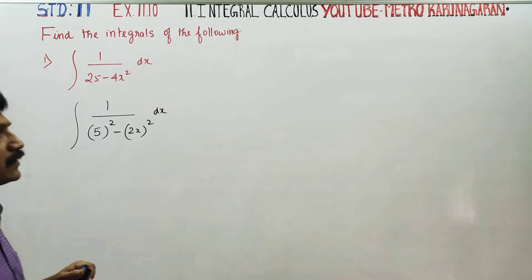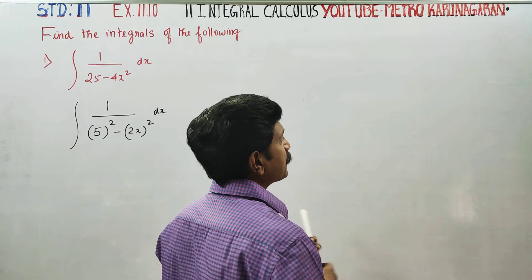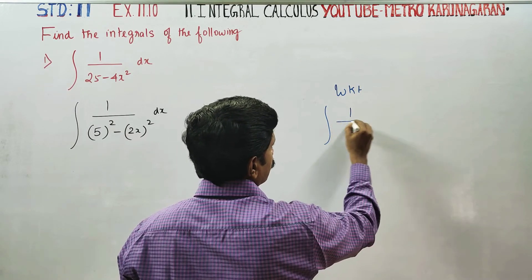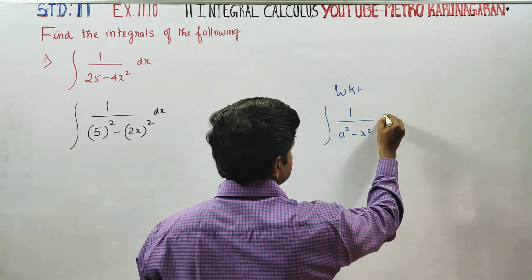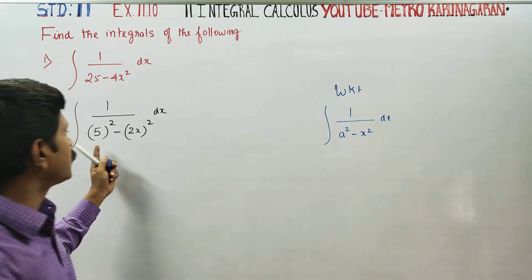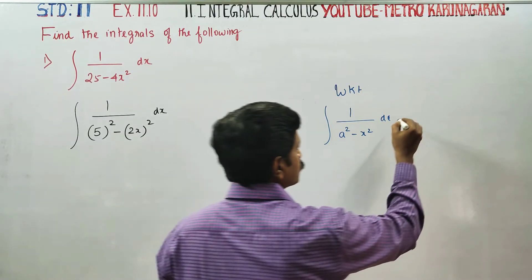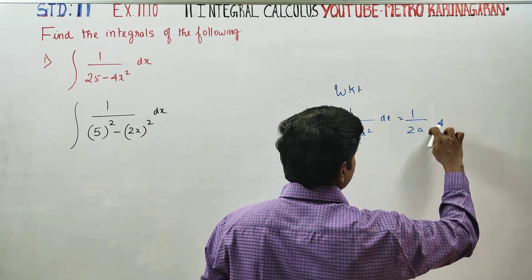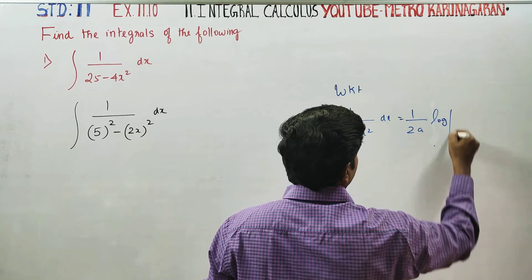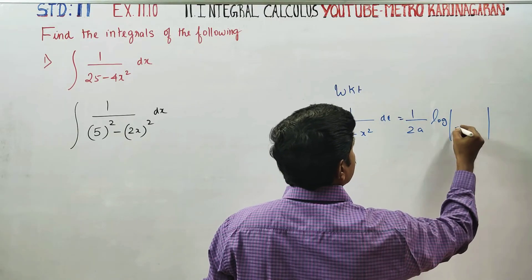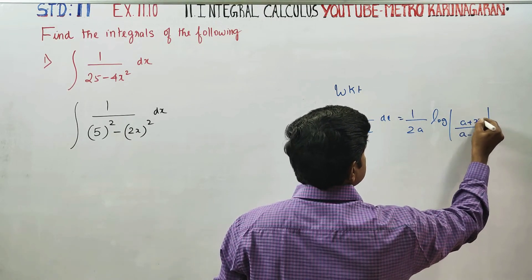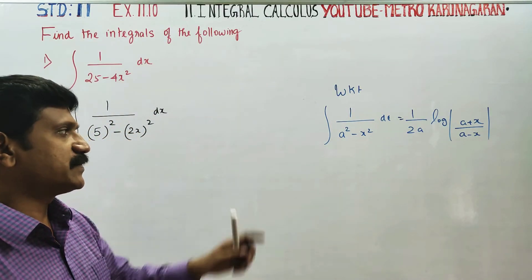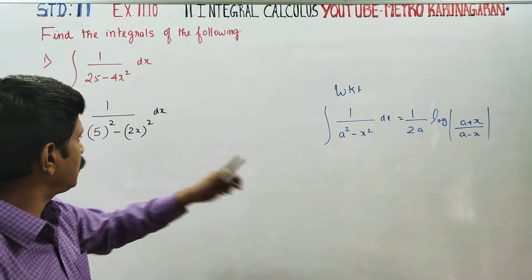I am going to take a reference formula. We know that the integration of 1 by a squared minus x squared. The formula goes like this: 1 by 2a, logarithm of modulus of a plus x by a minus x. That is the formula.